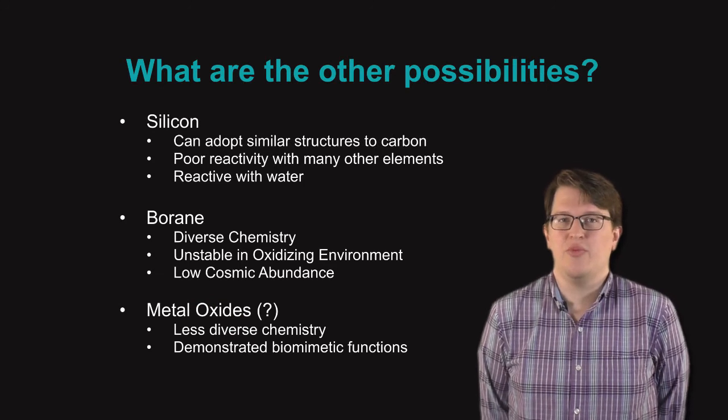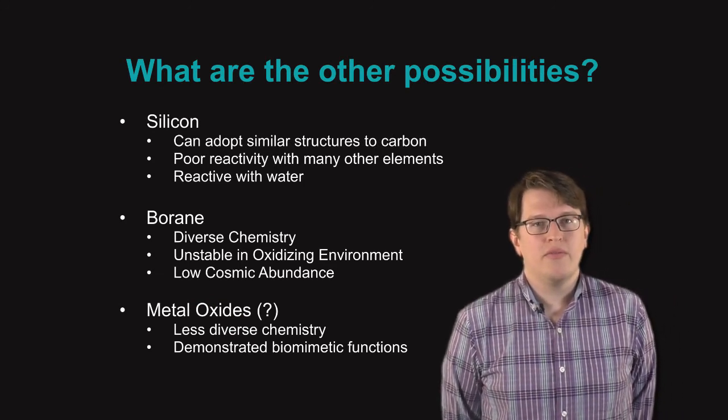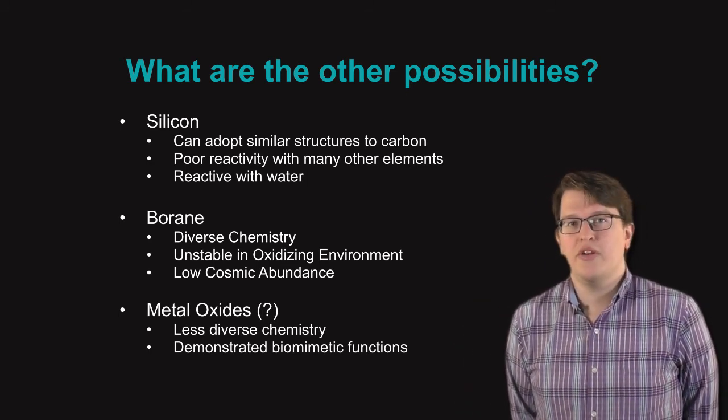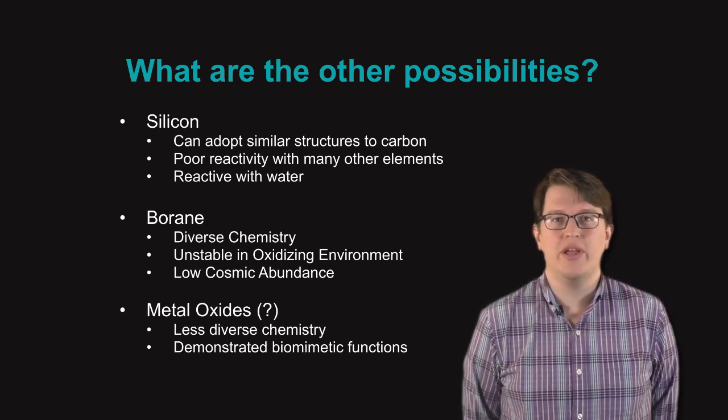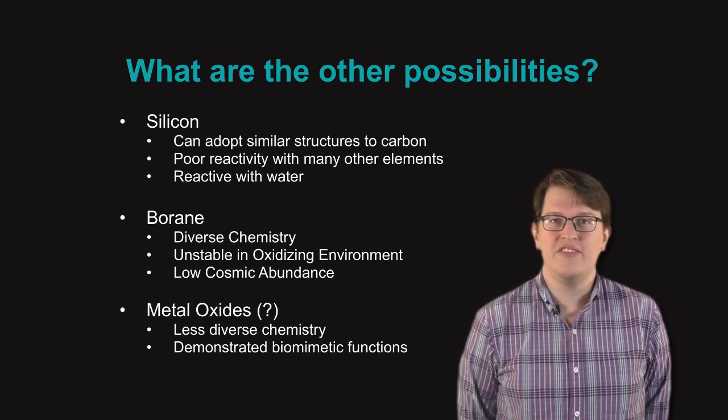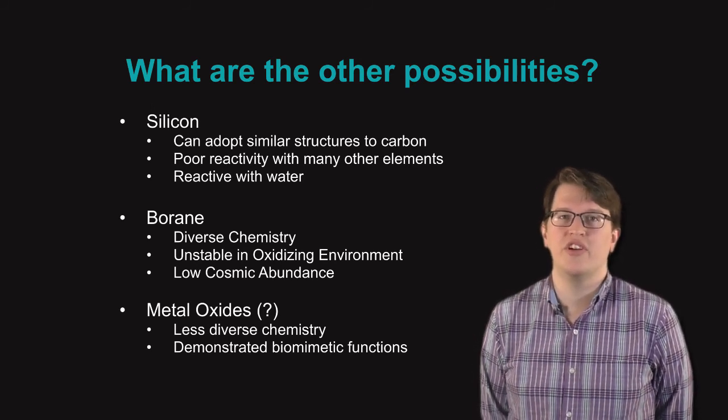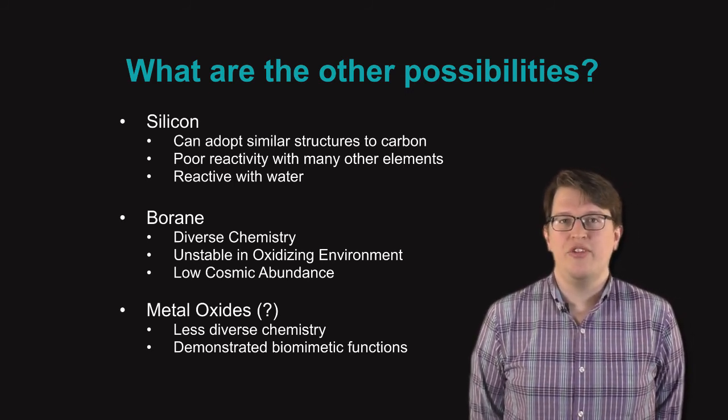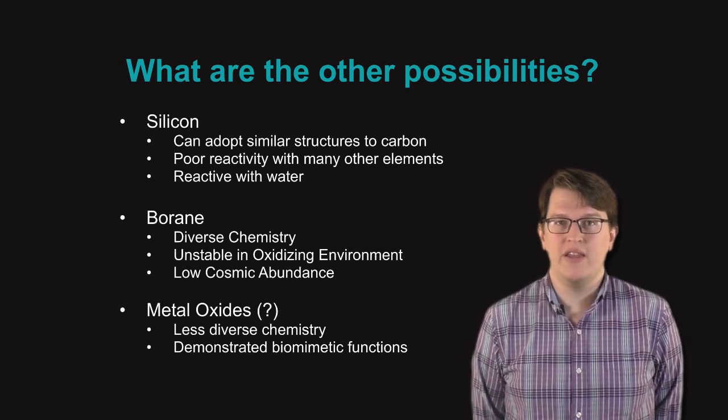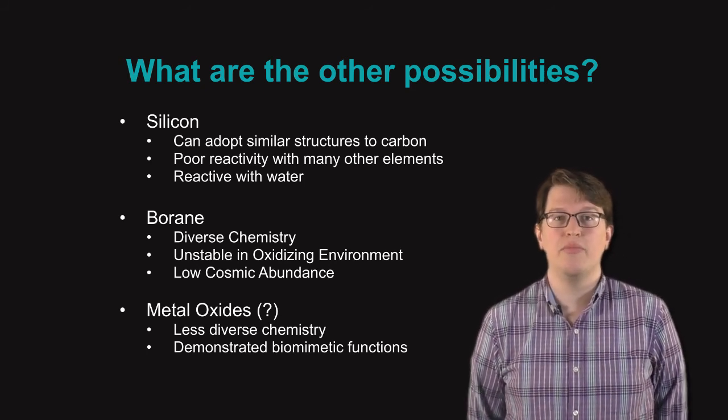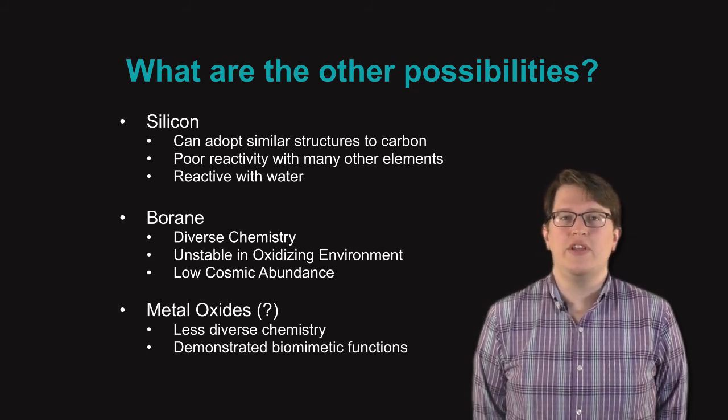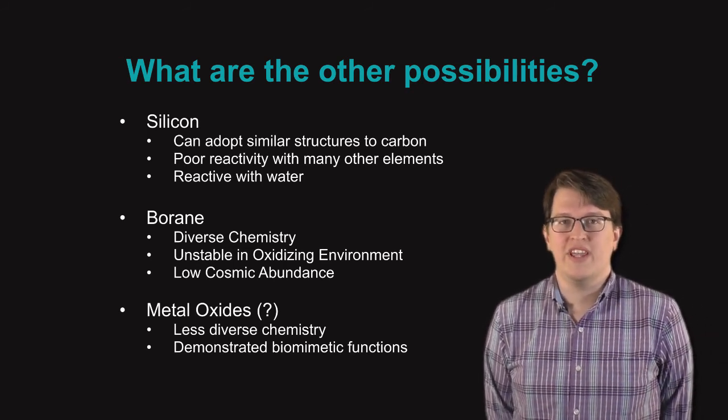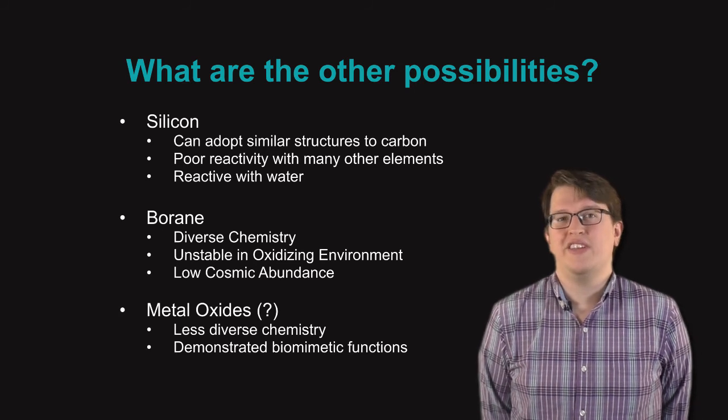But what are the other possibilities? What else could life be made of? People have discussed numerous options. One of the most popular in science fiction is silicon. Part of the reason for this is that it can adopt similar structures to carbon. It creates four bonds relatively easily and can create complicated three-dimensional structures. However, it has poor reactivity with many other elements. Life uses carbon-nitrogen bonds, carbon-oxygen bonds, carbon-sulfur bonds in order to create different chemicals that are necessary to perform the operations of life. Silicon can't really do that. Silicon is also reactive with water and tends to just form silicon oxides. So on Earth at least, silicon is a poor substitute.